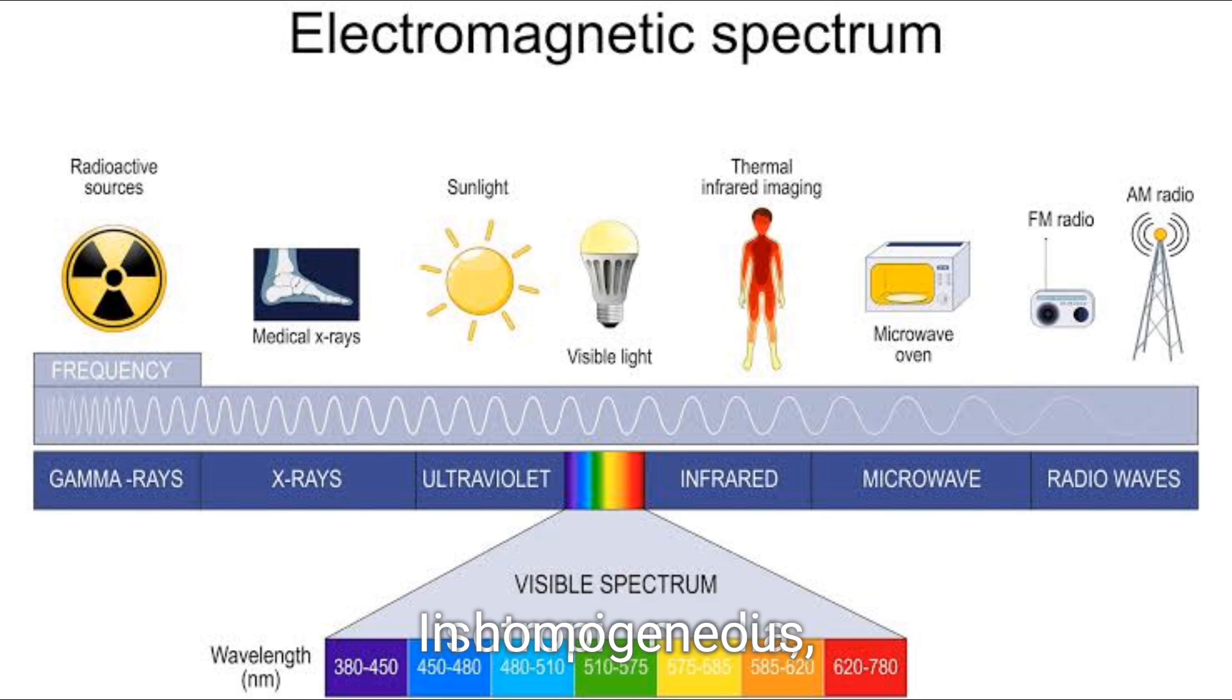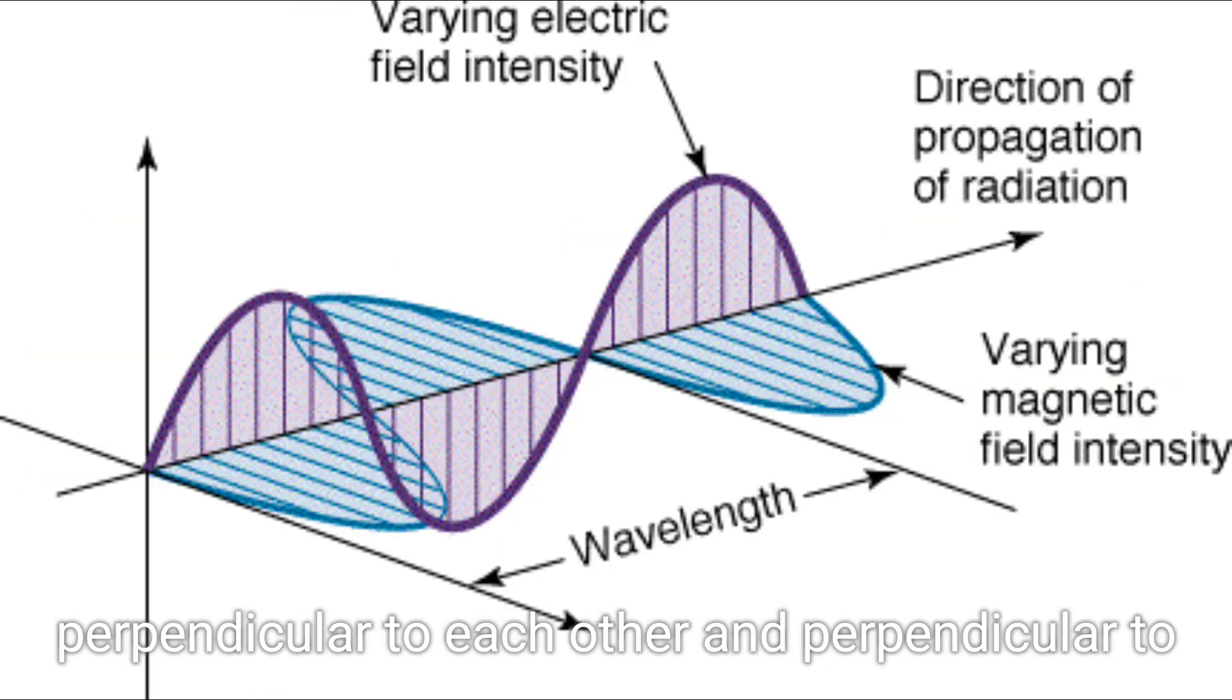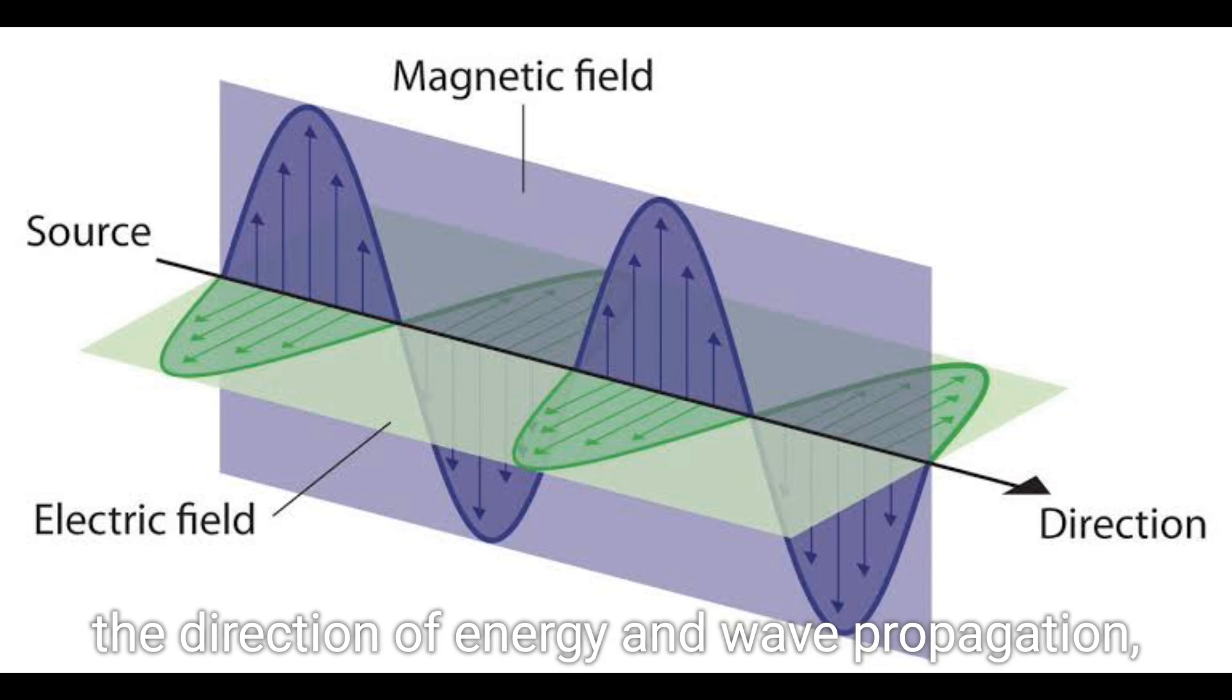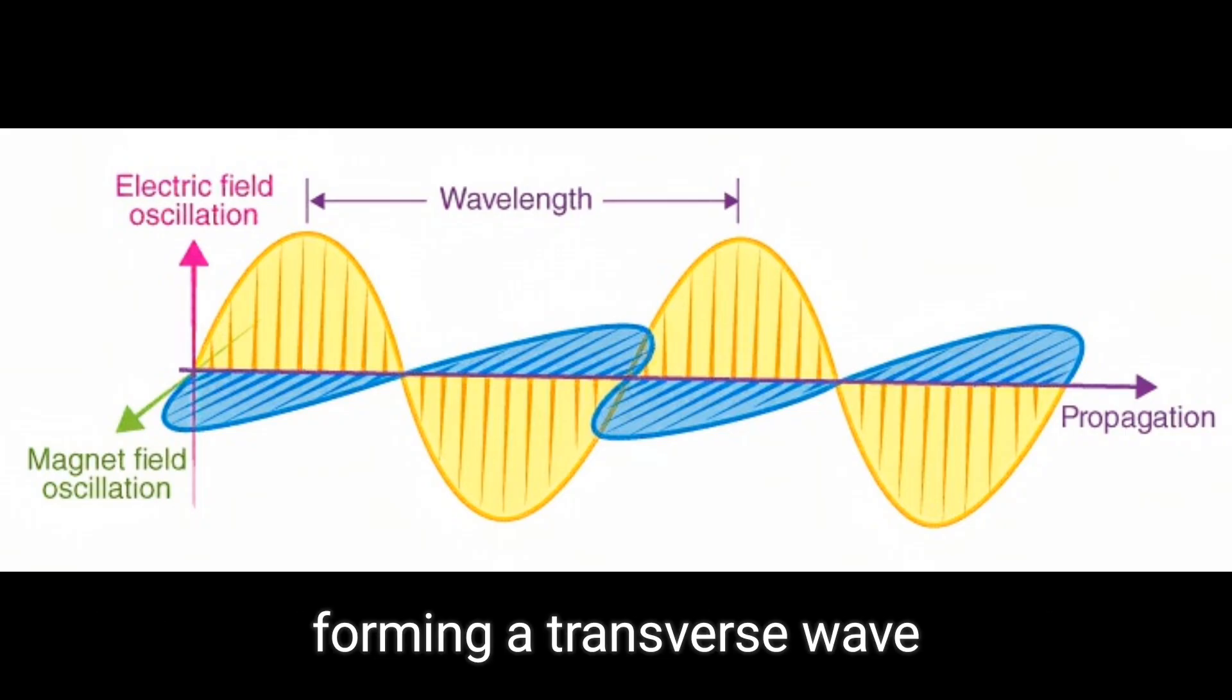In homogeneous isotropic media, the oscillations of the two fields are on average perpendicular to each other and perpendicular to the direction of energy and wave propagation, forming a transverse wave.